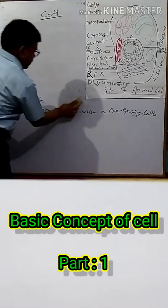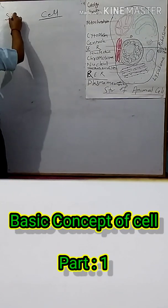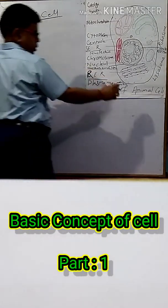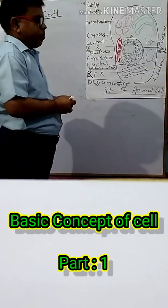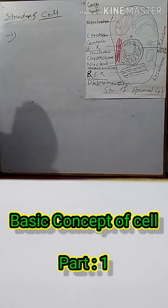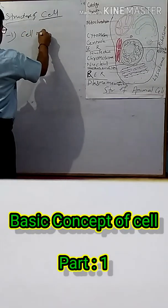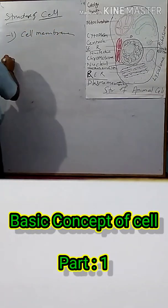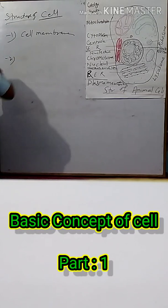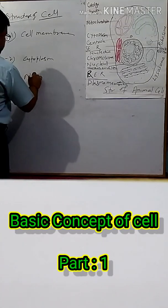What is the structure of the cell? Here is the structure of the animal cell. The cell consists of three main parts: number one, the cell membrane; number two, the cytoplasm; and number three, the nucleus.